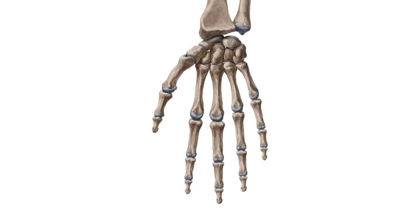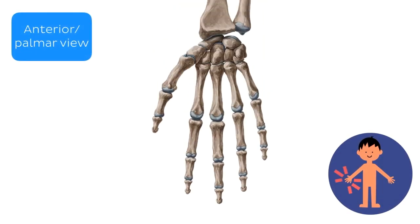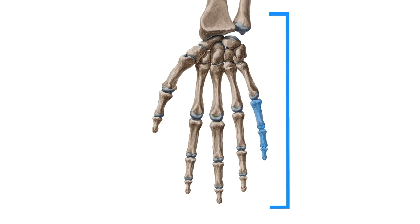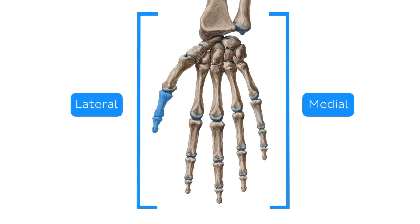Let's begin our journey with the bones of the wrist, otherwise known as the carpal bones. And to avoid any confusion, let's first get oriented. Here we have an anterior or palmar view of the wrist and the hand. This means that this side, the pinky side, is medial and the thumb side is lateral. You'll also see these respectively described as the ulnar and radial aspects of the hand. Keep this in mind as we move forward — the last thing you want on this journey is to get disoriented.